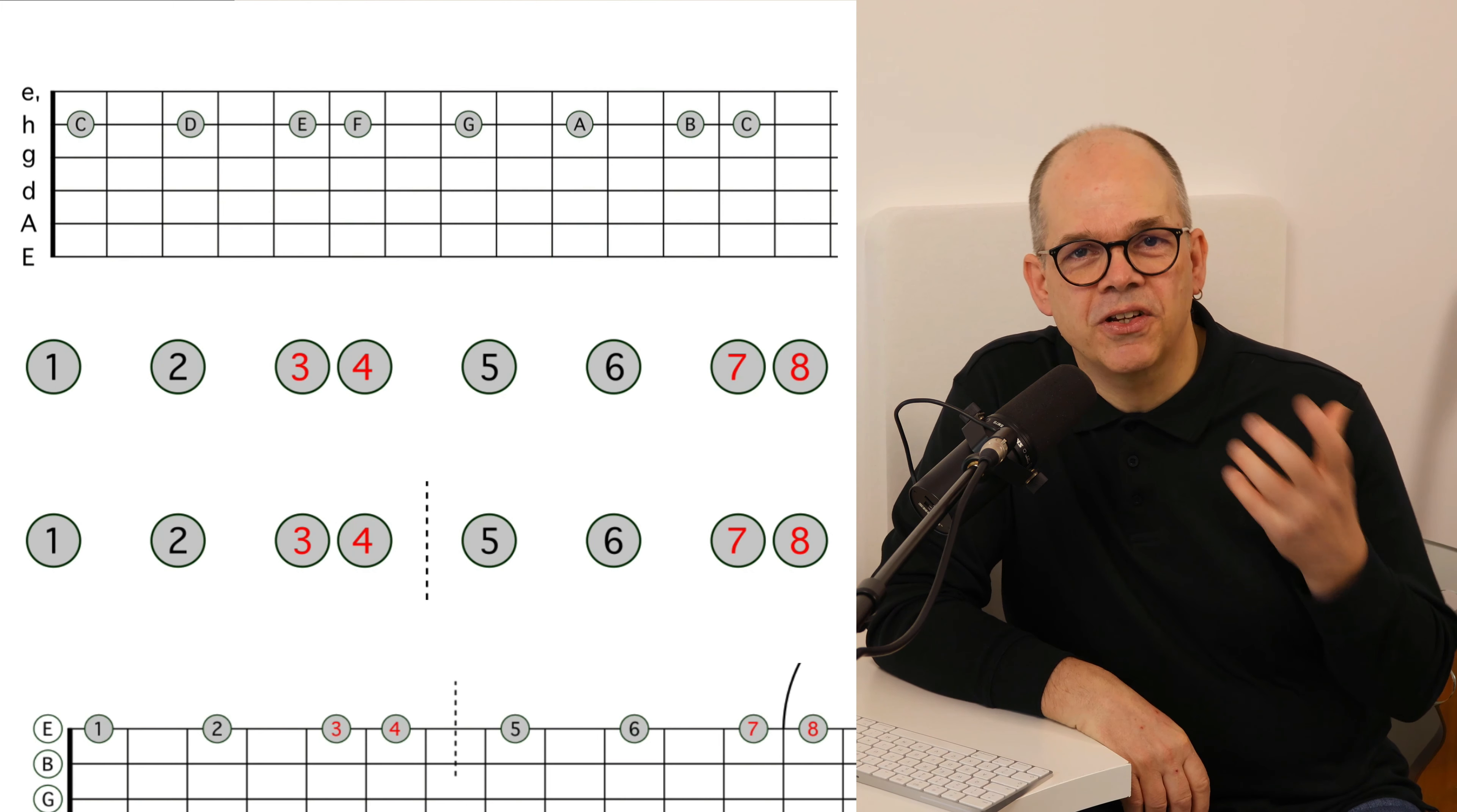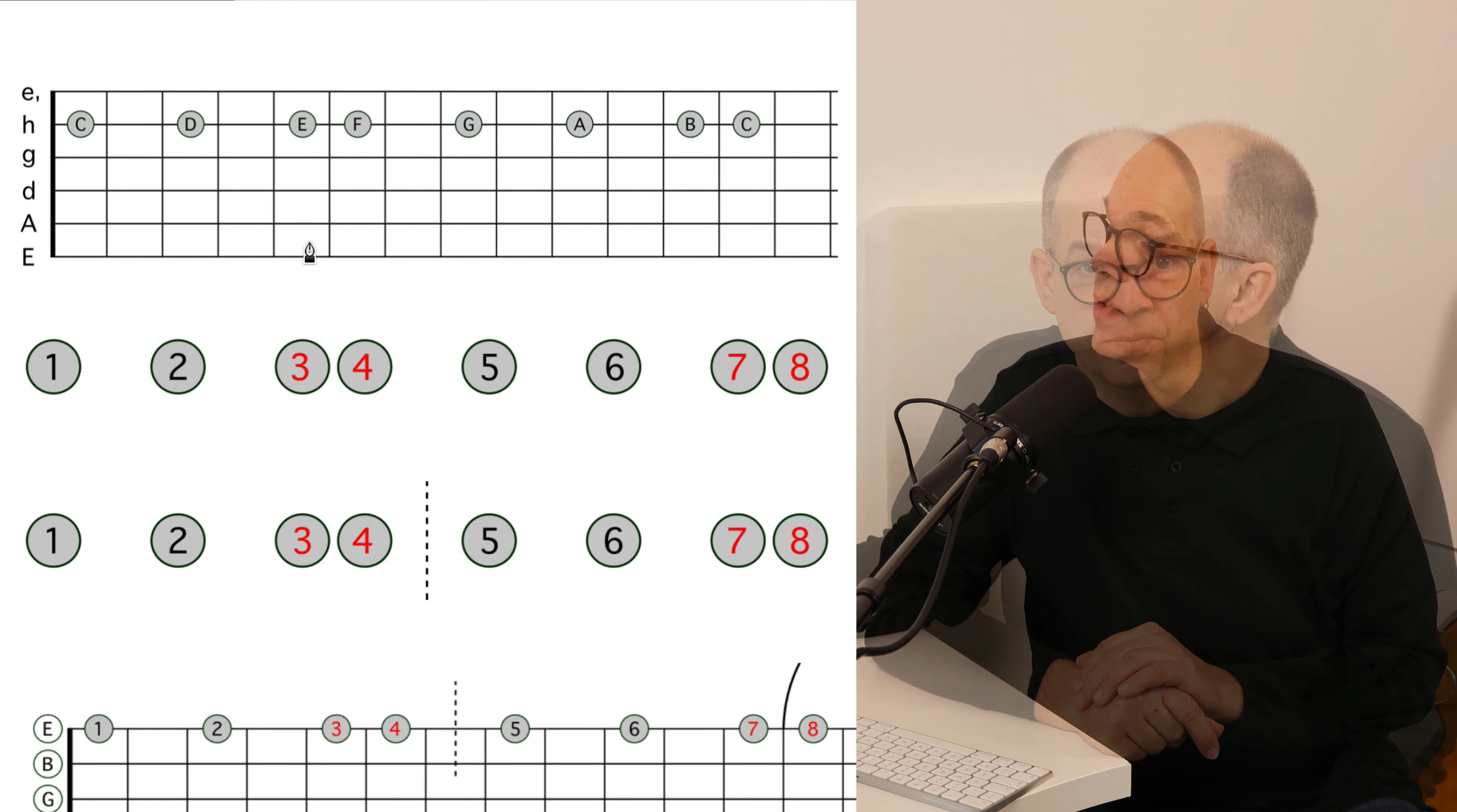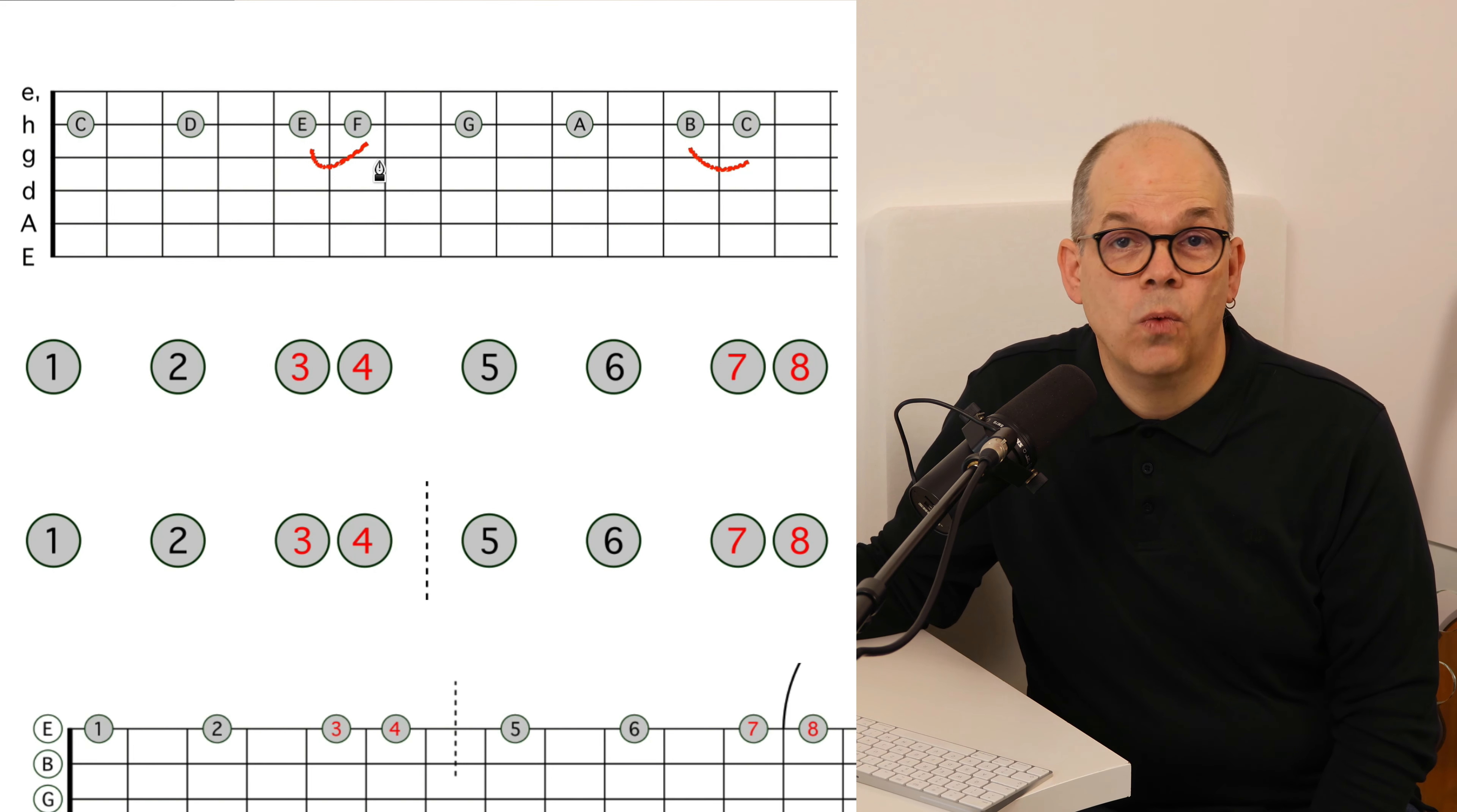Doing this on the guitar, you have in your hands the structure of the C major scale and all the other scales that use only notes without accidentals. You see E and F and B and C which are just one half step apart.